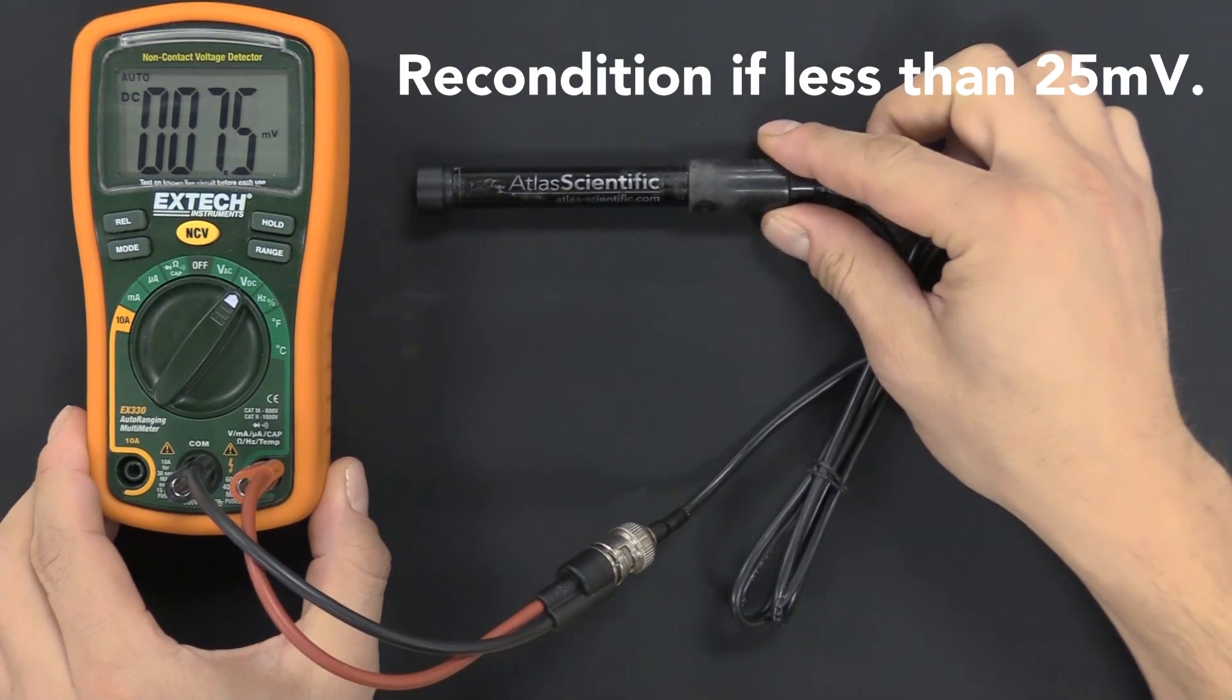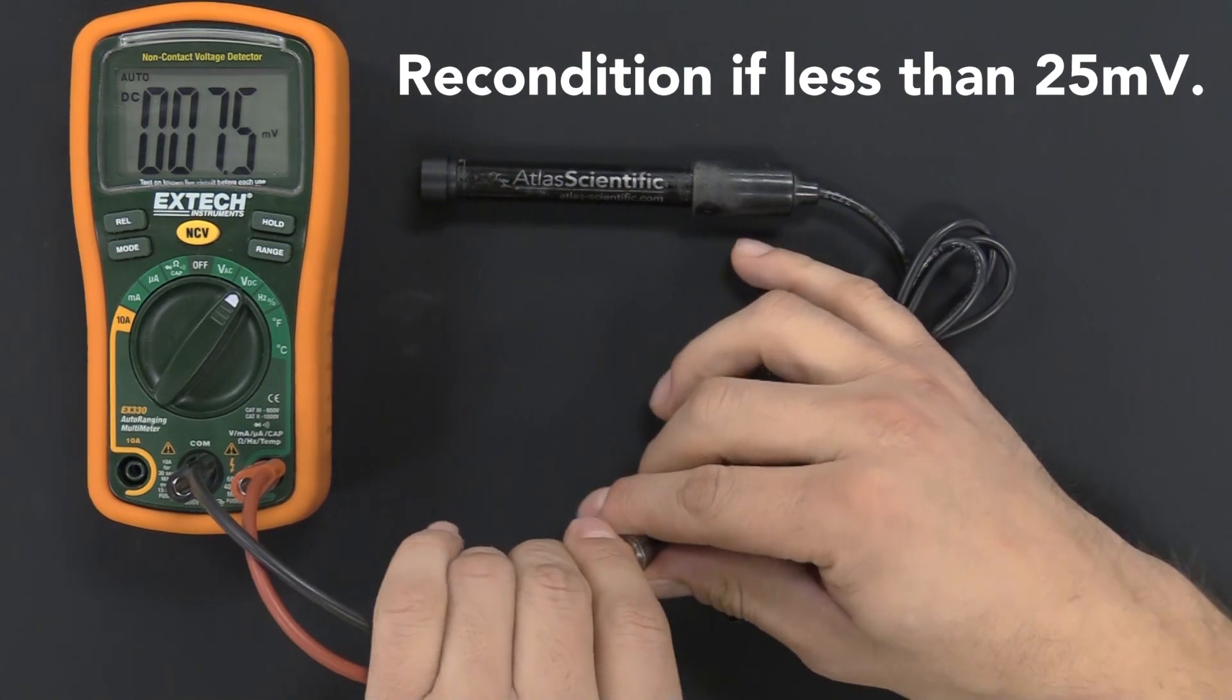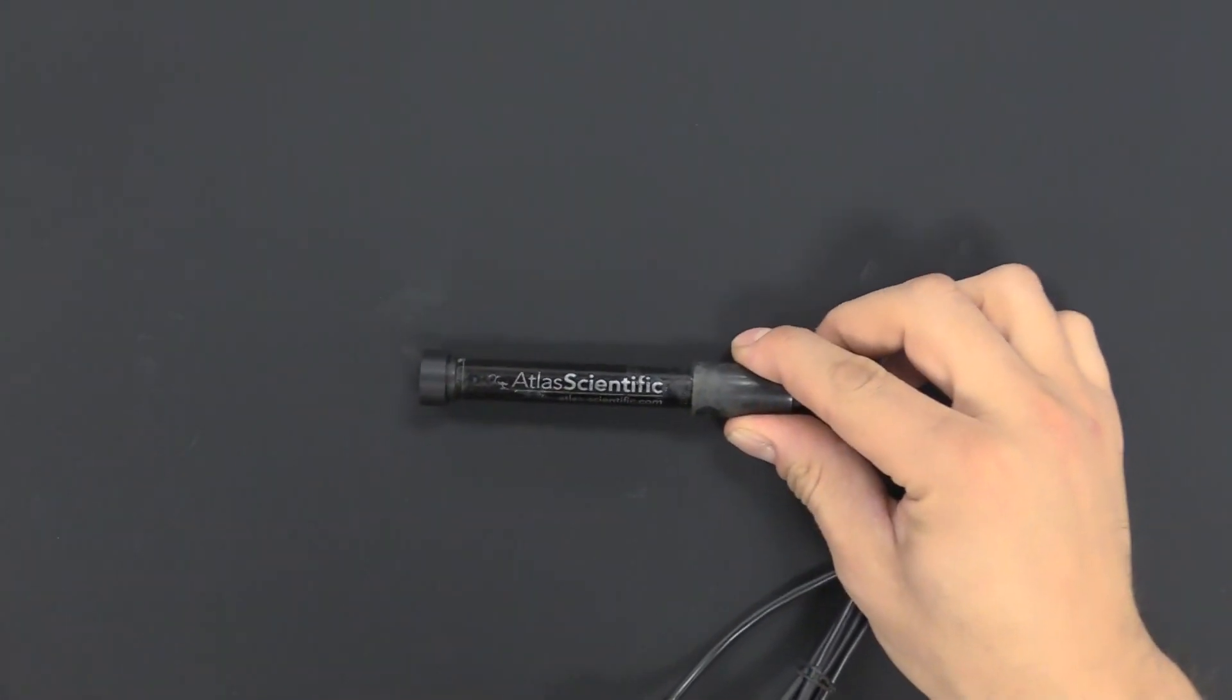Normally you don't want to connect a DO probe to a multimeter, but you can do it for 30 seconds or a minute. It's not going to kill it. So let's begin the reconditioning process.